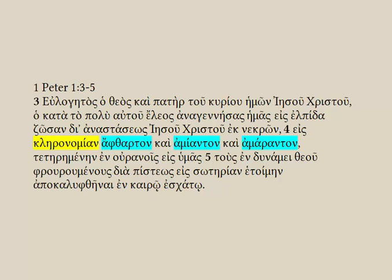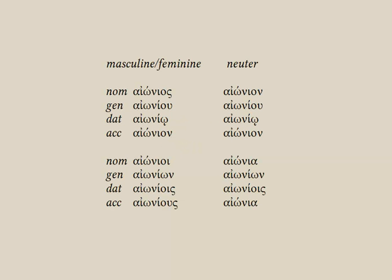Let's begin with our passage from 1st Peter 1 that we used in the first video and now take a look at verse 4. We seem to have a feminine noun, kleronimian, followed by a series of either masculine or neuter words. Well, some adjectives are called two-termination adjectives because they only have masculine and neuter endings and they don't have a separate form for the feminine. This is what they'll look like in a lexicon — just the nominative masculine and nominative neuter endings. And here's a sample paradigm, so you see the first column does duty for both the masculine and the feminine.